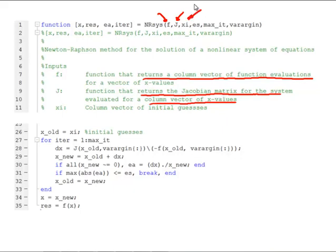Then, xi is going to be our initial guesses. And we have our standard stopping criterion, maximum iterations. And there are, again, so that we can handle parameters if we need to pass those through to our f and j functions.